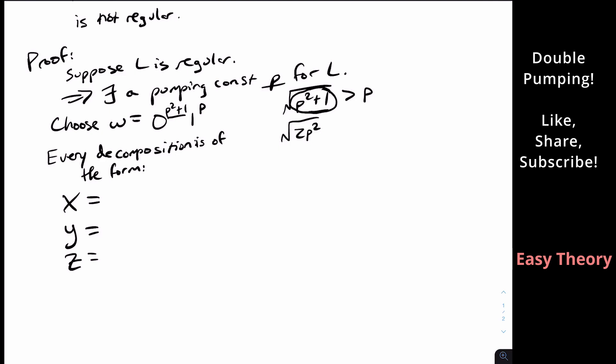So X, well, it must be in the zeros part because it's the prefix of the string, the beginning. So I don't know how many zeros it has, because we're looking at every decomposition. So let's just say that there are alpha of them. And then let's just say, well, Y has to be in the zeros too,